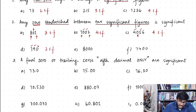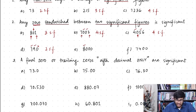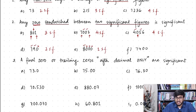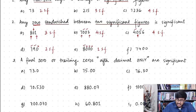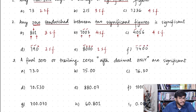For 8000: 8 is significant, but the three zeros at the end are not sandwiched, so they are not significant. There is only one significant figure in 8000, even though there are four digits. Similarly, 7400 has 7 and 4 as significant figures, but the two trailing zeros are not sandwiched and hence not significant — two significant figures.